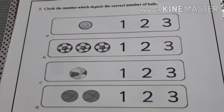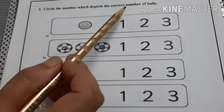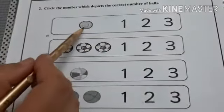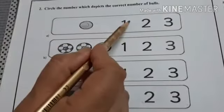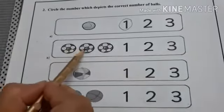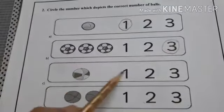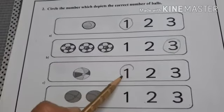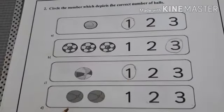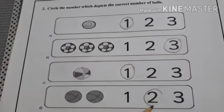Now, let's see the second question. Circle the number which depicts the correct number of balls. 1 ball. Then we will circle number 1. 1, 2, 3. 3 balls. Again 1 ball. We will circle number 1. 1, 2 ball. We will circle number 2.